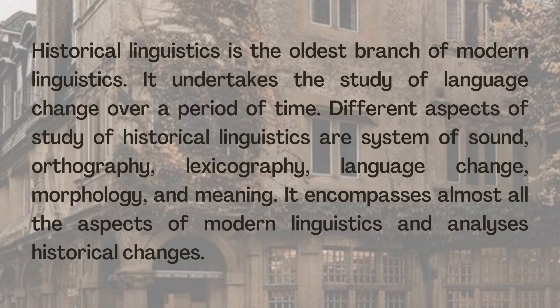Historical linguistics is the oldest branch of modern linguistics. It undertakes the study of language change over a period of time. Different aspects of historical linguistics include the system of sound, orthography, lexicography, language change, morphology, and meaning. It encompasses almost all aspects of modern linguistics and analyzes historical changes.